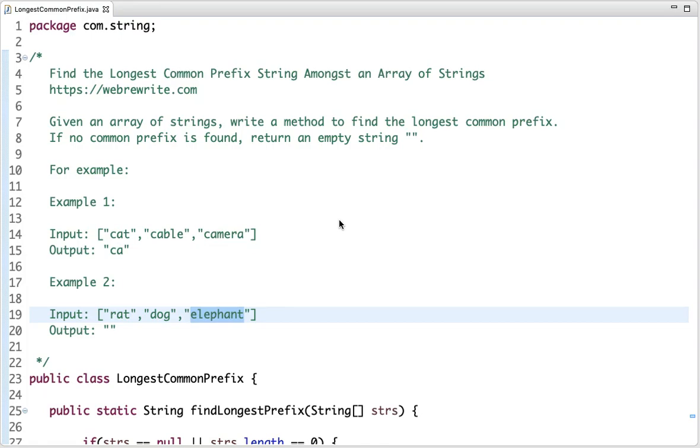Find the longest common prefix string amongst an array of strings. So the problem statement is: given an array of strings, write a method to find the longest common prefix. If no common prefix is found, return an empty string.